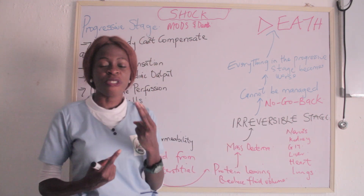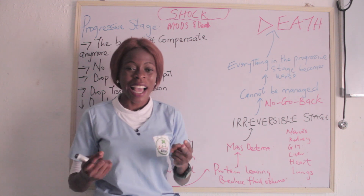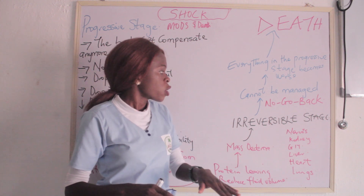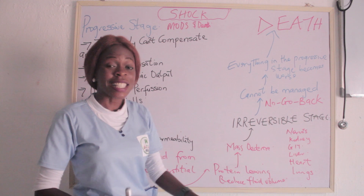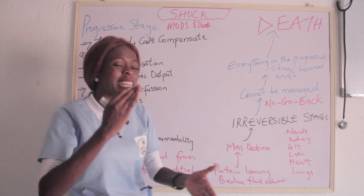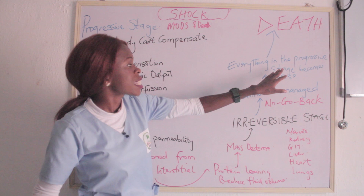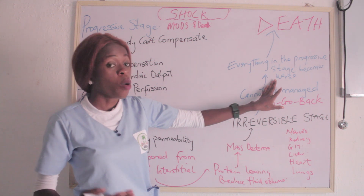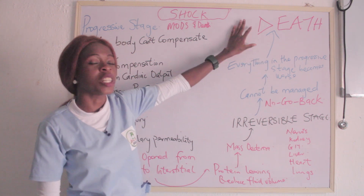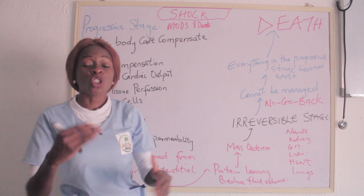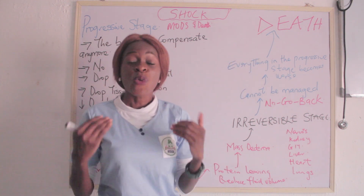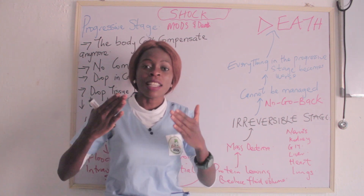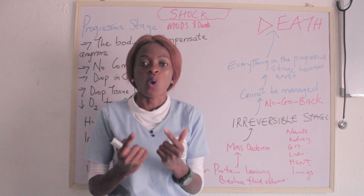When not properly halted, it leads to the irreversible stage of shock, also known as the refractory stage. At this moment, there is nothing you can do — it is irreversible, it cannot be managed. Everything from the progressive stage becomes worsened and it leads to death. Shock is a very serious condition which must be treated immediately, because if not treated, it will progress and finally lead to death.